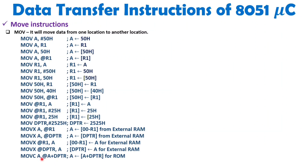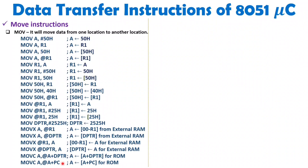When you execute MOVC, you are operating with ROM. 'C' is used to operate with ROM. When you write MOVC A, @A+DPTR, the sum A+DPTR points to an address in ROM, and the data at that address is copied into the accumulator. When you execute MOVC A, @A+PC, the sum A+PC points to a ROM address, and the data at that location is moved into the accumulator. These are the ROM-access move operations in 8051.